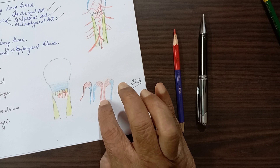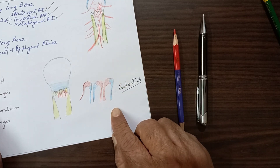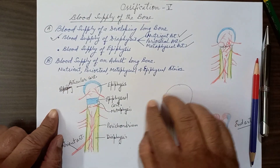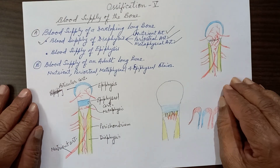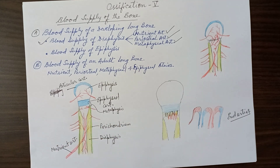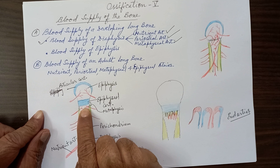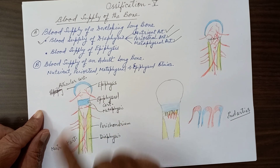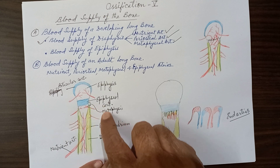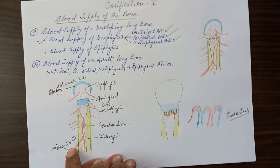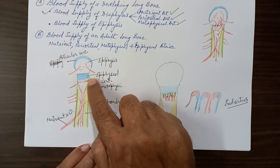The metaphysial arteries are clinically important for this reason. They do not penetrate the epiphyseal cartilage because the epiphyseal cartilage is an avascular structure — it gets nourishment and oxygen by diffusion from the metaphysial and epiphysial arteries. So the three arteries supplying the diaphysis are: the nutrient artery, the periosteal arteries, and the metaphysial arteries.